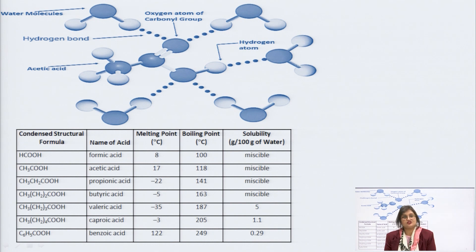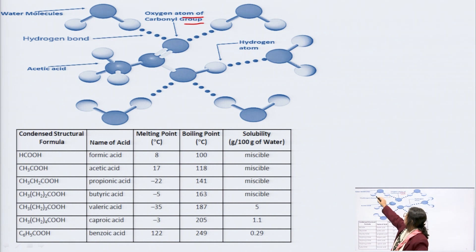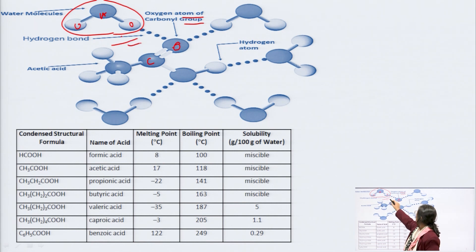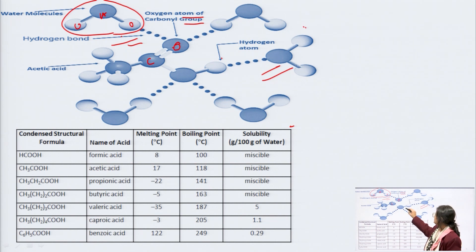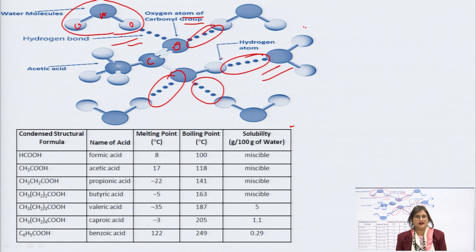Looking at these structures, the oxygen atom of the carbonyl group forms hydrogen bonds with water molecules. Similarly, the hydrogen atom of the carboxylic group forms hydrogen bonding with water molecules, where bonding occurs between the oxygen atom of the carbonyl group and the hydrogen atom of the water molecule.